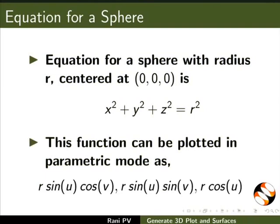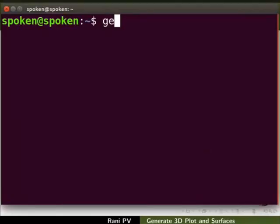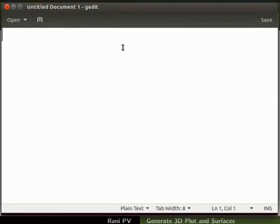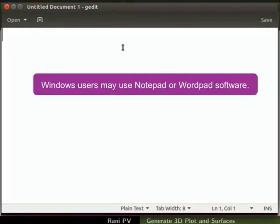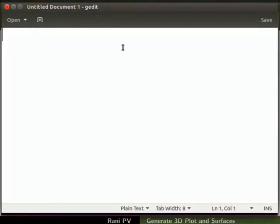We will write a script to draw a sphere in GNUplot using the text editor, then run the script file to plot a graph. Open another terminal and type gedit to open a gedit window. Windows users may use notepad or wordpad software. Let's enter a command on the first line. I will type hash my first 3D plot and press enter to start a new line.